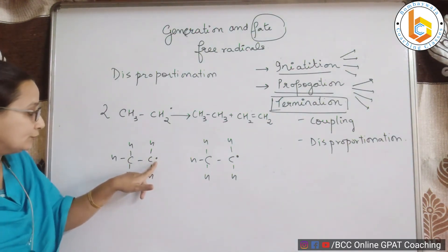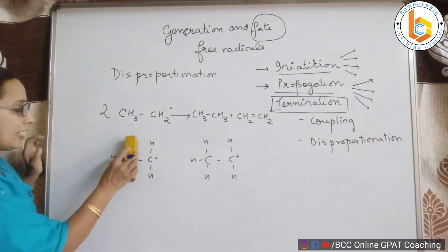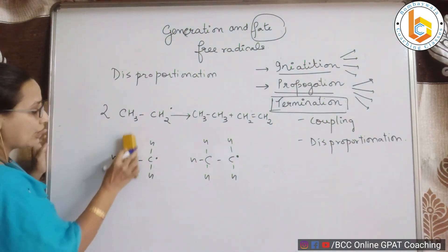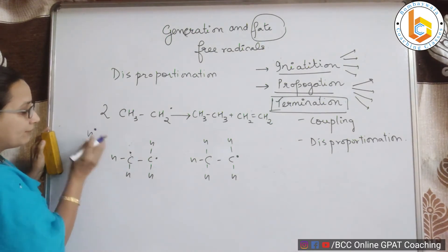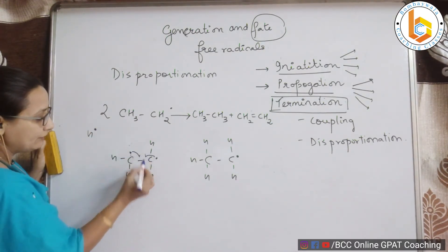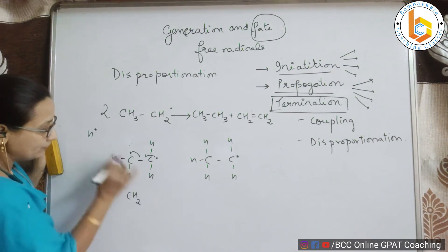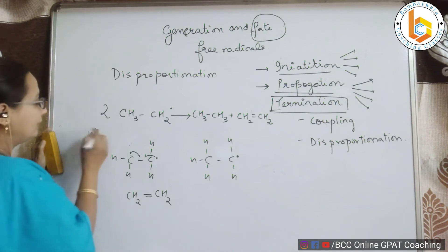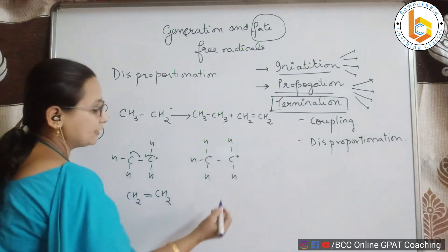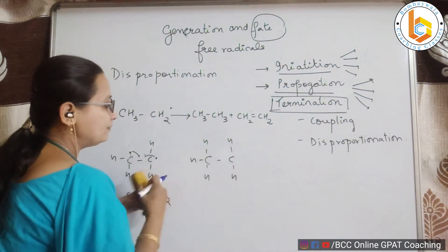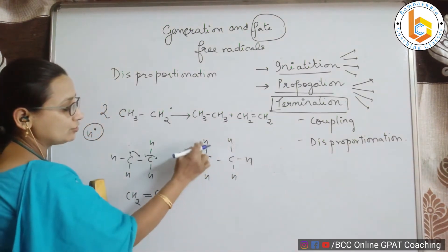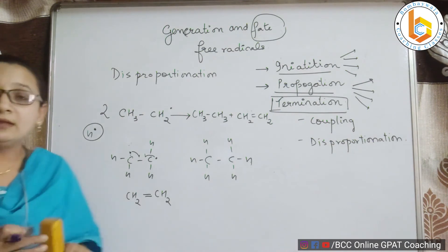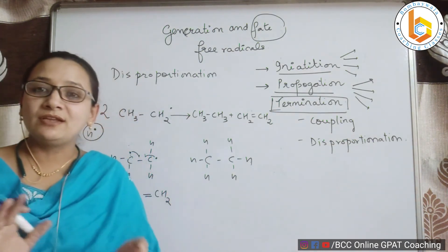Now let us see how these products are formed. An H atom goes outside the system by giving its electrons, forming CH2=CH2 (ethene), and the H combines with the other ethyl radical to give CH3CH3 (ethane). That is how simple the disproportionation reaction occurs.